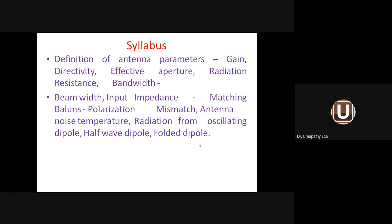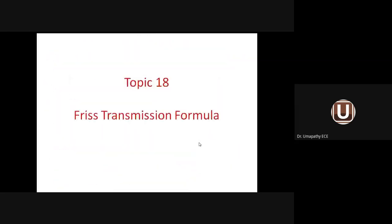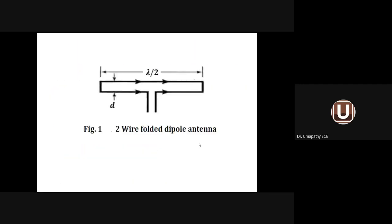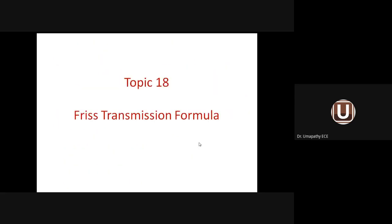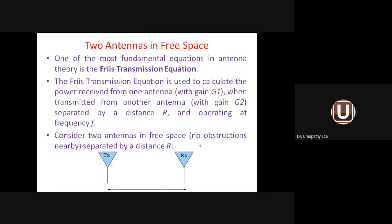One important topic left out under Unit 1 is the Friis transmission formula — not in the syllabus but periodically asked in university examinations. There are two antennas in free space: a transmitting antenna and a receiving antenna separated by distance R. The Friis transmission formula is one of the most fundamental equations in antenna theory.